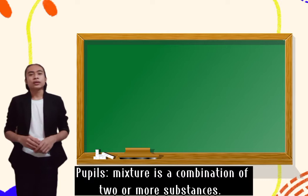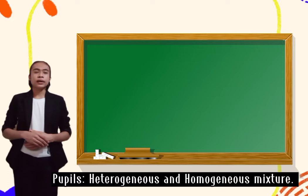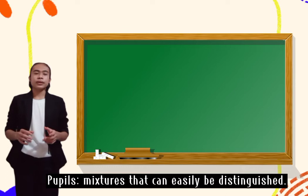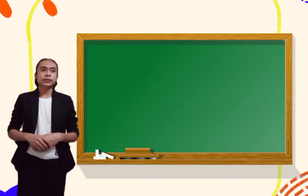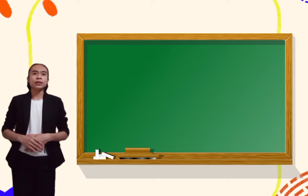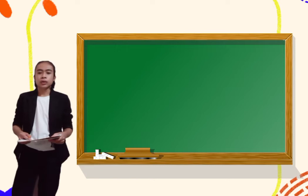Okay, class, again, what is a mixture? Okay, very good. What are the two types of mixture? Okay, very good. Now, what is a heterogeneous? Okay, correct. And, can you give me example of heterogeneous? Okay, thank you. And, what is homogeneous? Can you give me some example of homogeneous? Okay, correct. Very good.